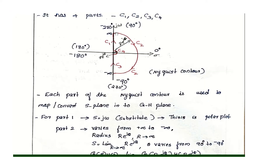For the second part C2, which runs from plus infinity to minus infinity along the imaginary axis, we need to evaluate the transfer function along this path for the Nyquist plot.